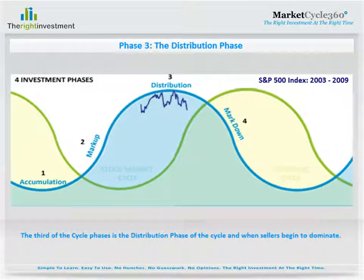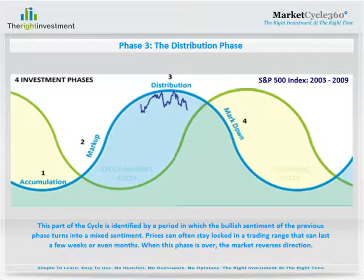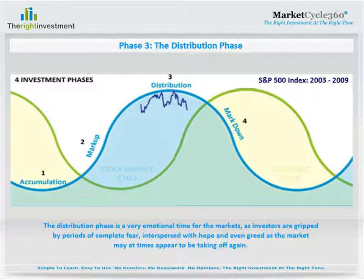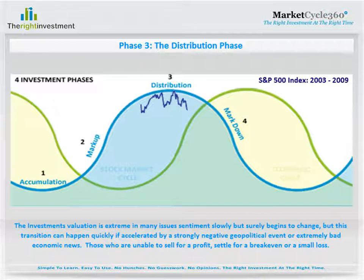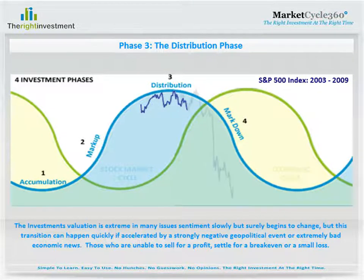The third of the cycle phases is the distribution phase, when sellers begin to dominate. This part of the cycle is identified by a period in which the bullish sentiment of the previous phase turns into a mixed sentiment. Prices can often stay locked in a trading range that can last a few weeks or even months. When this phase is over, the market reverses direction. The distribution phase is a very emotional time for the markets, as investors are gripped by periods of complete fear, interspersed with hope and even greed, as the market may at times appear to be taking off again. The investment's valuation is extreme, and sentiment slowly but surely begins to change — though this transition can happen quickly if accelerated by a strongly negative geopolitical event or extremely bad economic news. Those who are unable to sell for a profit settle for a break even or a small loss.